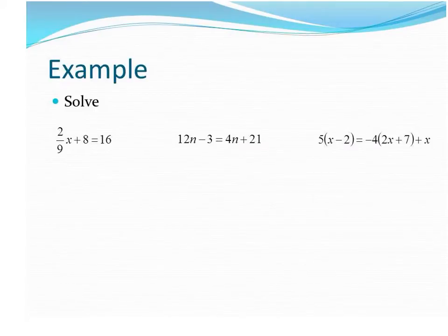A few examples to look at. So the idea behind solving an equation is you want to get the variable by itself. So you're always working towards getting the variable on one side all by itself. So this first one, I got x already on one side, so I want to clear everything away from x. So subtract 8 from both sides, you get 2 ninths x equals 8.